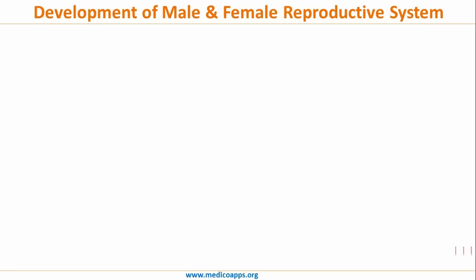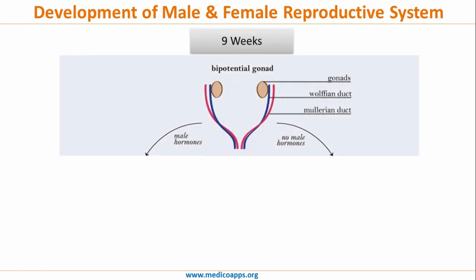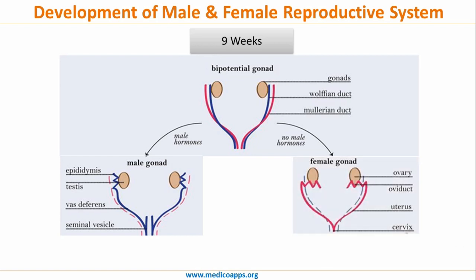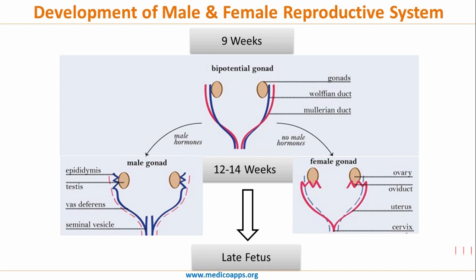Let's now look at the development of the male and female reproductive system. At around 9 weeks of gestation, we have bipotent gonads and the Mullerian and Wolffian ducts. In the presence of male hormones in the fetus, development of the male gonads takes place along with the epididymis, vas deferens, and other male reproductive structures. However, in the absence of male hormones, female reproductive organs develop from the paramesonephric or Mullerian ducts. The development of the genitourinary system continues from 12 to 14 weeks till late fetus.